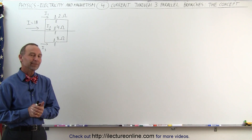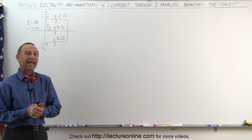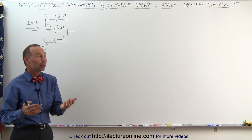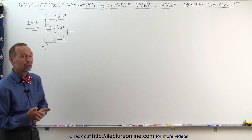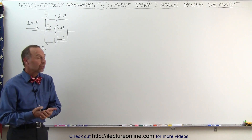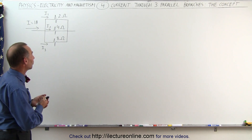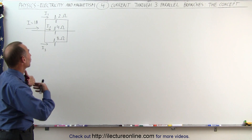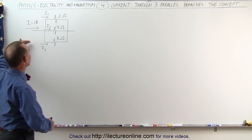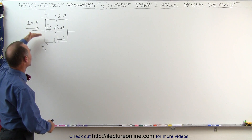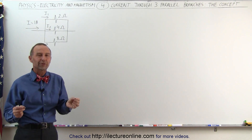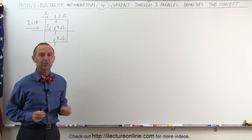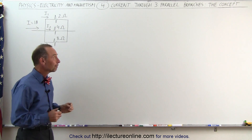Welcome to ElectronLine. Now let's take a look at a triple branch — three parallel branches, each with a different resistor — and we're trying to determine the amount of current that will flow through each of the branches. We're going to do it from a conceptual perspective first.